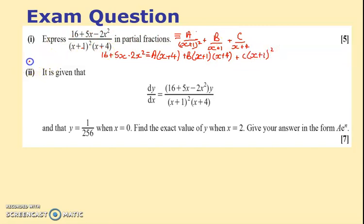So I set x equal to a few numbers. When x equals minus 4, that goes, that goes, the only thing left is that. Now what's the left hand side give me? 16. I'll just do this from the calculator. 16 plus 5 times negative 4 minus 2 times negative 4 squared. I get minus 36 on the left hand side. So I get that. So it's minus 4 plus 1 is minus 3, squared is 9c. And I think therefore c is equal to minus 4, because 36 divided by 9. So I've got my c.